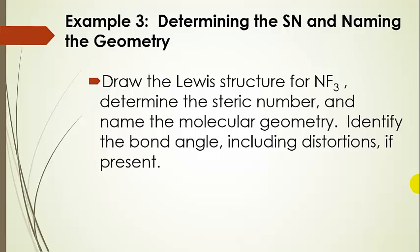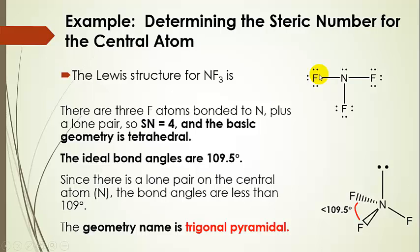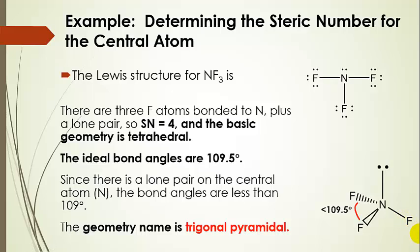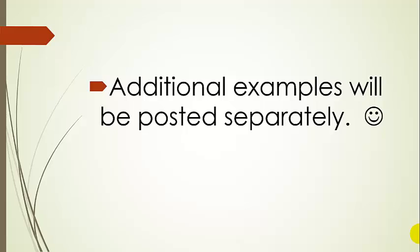Here's another one: nitrogen trifluoride. Here's the Lewis structure for NF₃. The steric number is four — three bonded atoms and one lone pair. The bond angles would ideally be around 109.5 degrees, but the lone pair with sharp elbows squeezes all of the bond angles to less than 109 degrees. This shape is based on the tetrahedral geometry, but with a lone pair taking one position on the central atom. Naming based on atom positions, we call it a trigonal pyramid. Additional examples will be posted separately.